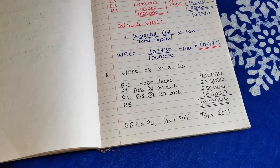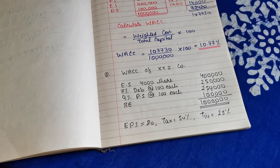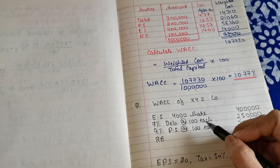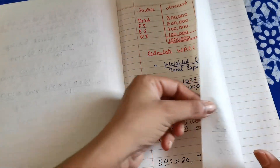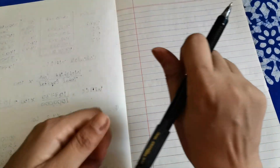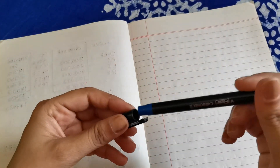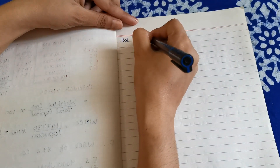We need to calculate the weighted average cost of capital. Before starting I can tell you we need to first calculate: cost of equity capital, cost of debt capital, cost of preference capital, and cost of retained earnings — and then combine all of them. All of them will be after tax. Let us start with the solution — we'll begin with debt capital, then preference, then equity.